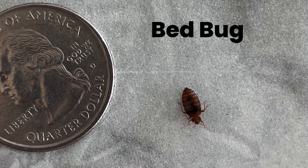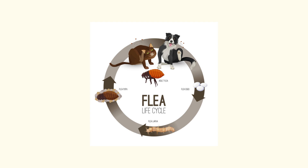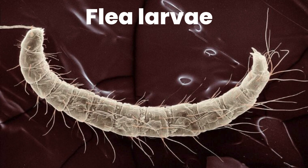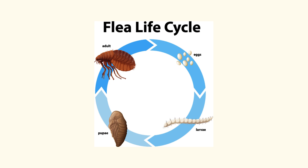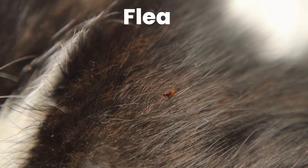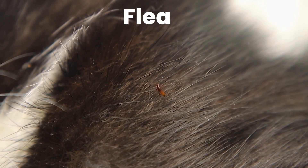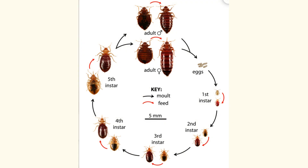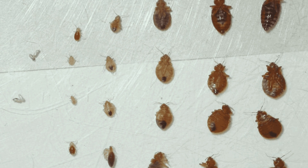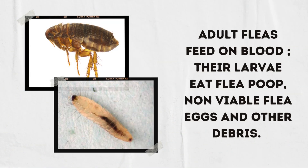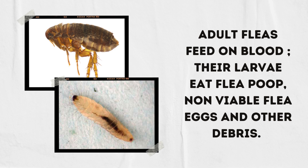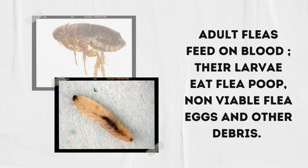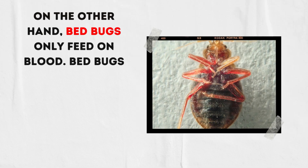Their life cycle is also quite different. Fleas have a complete metamorphosis and have larval and pupal stages. A flea goes from egg hatching into a larva, then the larva transforms into a pupa, and then from there the adult emerges. On the other hand, bed bugs have an incomplete metamorphosis. The bed bugs hatch from an egg, then go through 5 nymph stages, then onto an adult. Each nymph stage looks exactly like the adult bed bug, just smaller. Both adult parasites need to feed off blood. However, the flea larval stage will also feed on flea droppings nearby, as well as viable eggs.